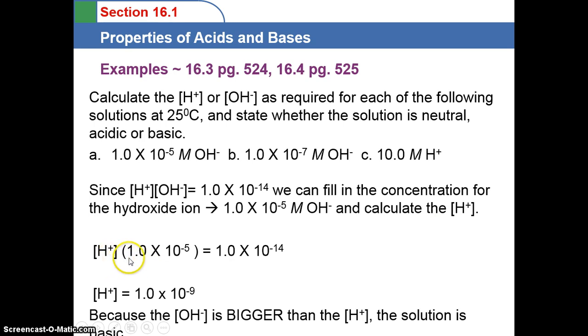We just plug it into our formula. H+ concentration times the OH- concentration is 1 times 10 to the negative 14th, divide both sides by 1 times 10 to the negative 5th, and that leaves the hydrogen ion concentration at 1 times 10 to the negative 9th, and that is your answer.